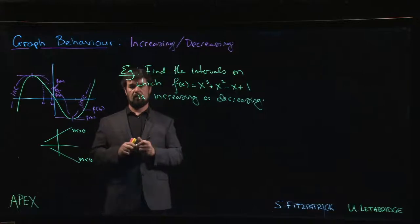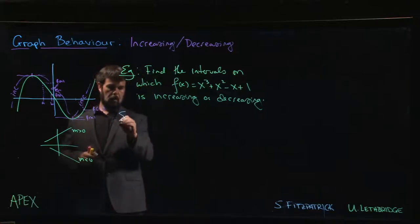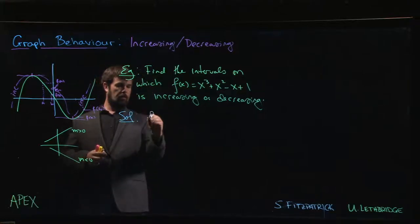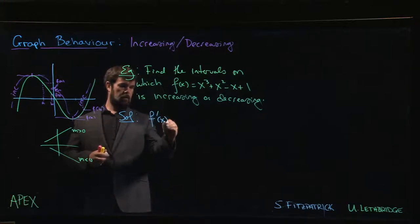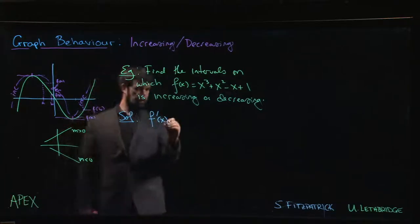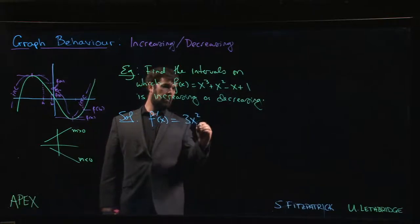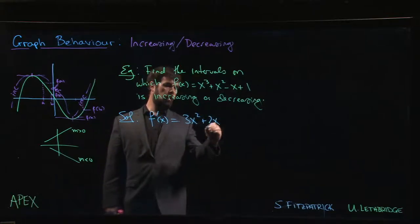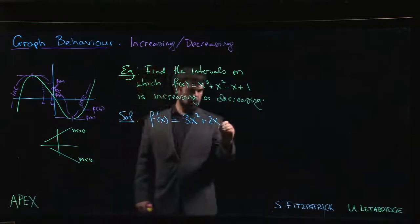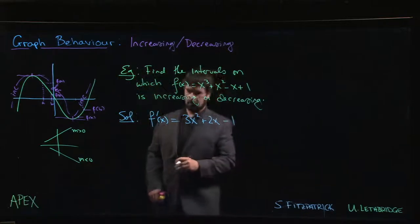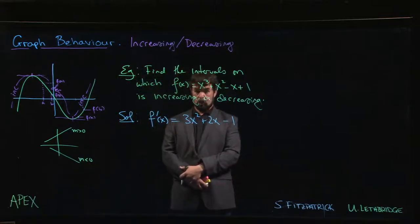So what we do if we want to figure out the intervals on which a function is increasing or decreasing is we look at the derivative. So we compute f'(x) = 3x² + 2x - 1, and we want to know where this quadratic is positive or negative, which means we should try to factor.